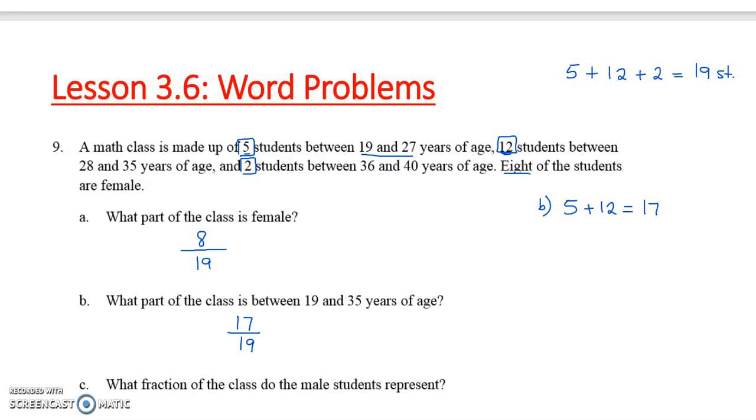And then C, what fraction of the class do the male students represent? Well, we know from part A that eight of the students are female, and we know the total is 19. So let's take away the female students so that we can get to the male students. And we see that 19 minus 8 is 11. So the male students represent 11 out of the 19 in that class.